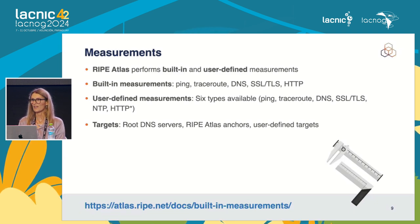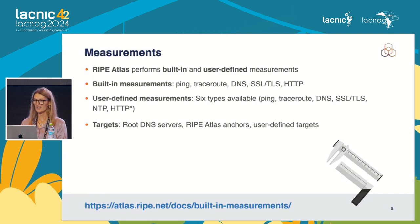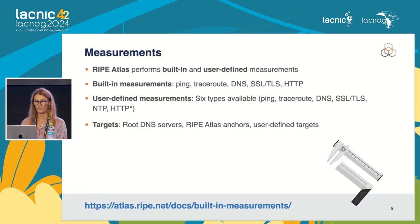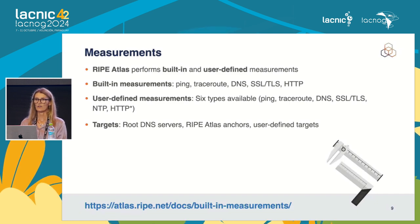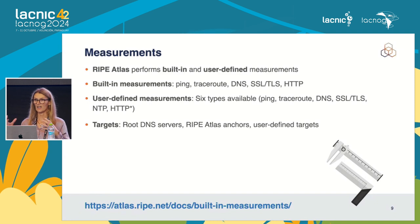What measurements can we do with this platform? There are six different types: ping, traceroute, DNS, SSL/TLS, HTTP, and NTP. HTTP is only available if you have one of the anchors as a target. There are two types of measurements: built-in measurements that RIPE NCC does at targets of common interest such as the root servers, and a mesh between all the anchors creating a very complete regional image.